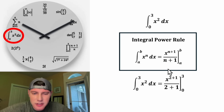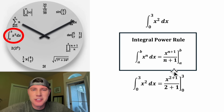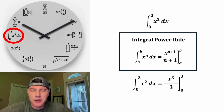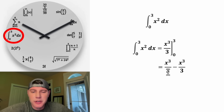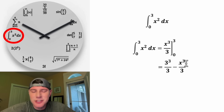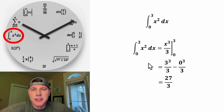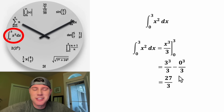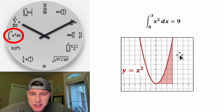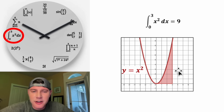So this integral becomes x to the 2 plus 1 over 2 plus 1, evaluated from 3 to 0 — that's x cubed over 3 evaluated from 3 to 0. We plug in 3 for the first term and 0 for the second: (3 cubed over 3) minus (0 cubed over 3). 3 cubed is 27, and 27 divided by 3 is 9. 0 cubed is 0, so the whole integral equals 9. That's why it's located at the 9 o'clock position, and this region under the parabola has an area of 9 square units.